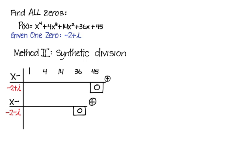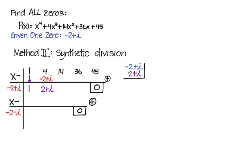There's a bit of complex multiplication involved. We bring down the 1, and multiply 1 times (negative 2 plus i), giving negative 2 plus i. We add 4 and negative 2 to get 2, with the i remaining, giving 2 plus i. Now we multiply (negative 2 plus i) times (2 plus i): straight down gives negative 4 and i times i is negative 1, so negative 5 real; cross terms give 2i and negative 2i which cancel. So the product is negative 5. We write that in the next column, add 14 and negative 5 to get 9.